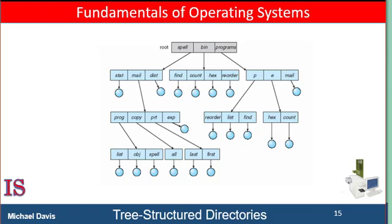In normal use, each process has a current directory. The current directory should contain most of the files that are of current interest to the process. When a reference is made to a file, the current directory is searched. If a file is needed that is not in the current directory, the user must specify a path name or change the current directory to the directory holding that file. A system call is provided that takes a directory name as a parameter and uses it to redefine the current directory — that 'cd' command was a system call. Other systems leave this to the application, like a shell, to track and operate on a current directory, as each process could have different current directories.